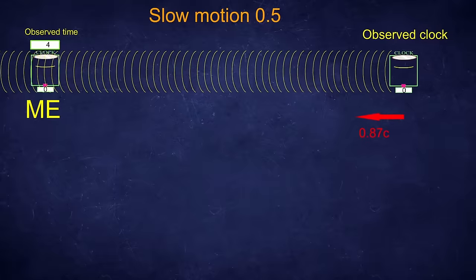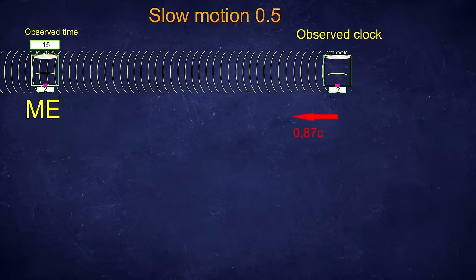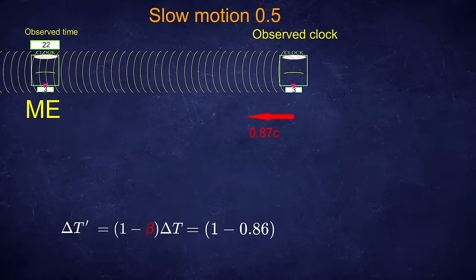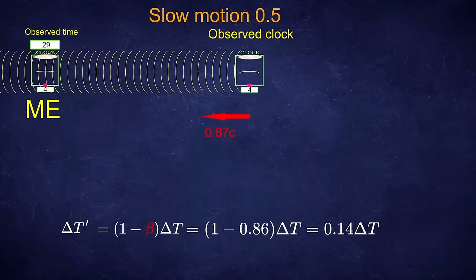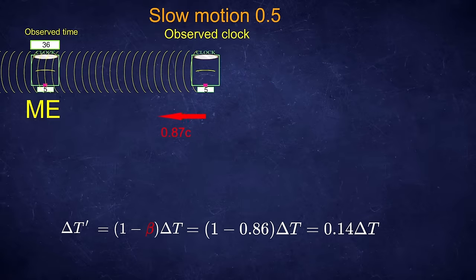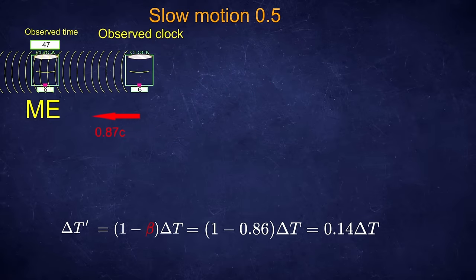If you are approaching, let's say, with the velocity of 0.86c, then each second on the observed clock would equal only 0.14 seconds on your clock. So you would see the clock running fast,